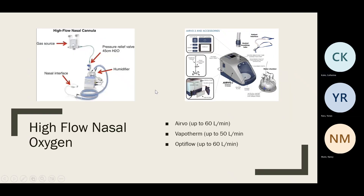The high flow nasal cannula system — there are a lot of different companies: Airvo, Vapotherm, Optiflow — but they all have a very similar mechanism. The Vapotherm only goes up to 50 liters per minute and the other two go to 60.